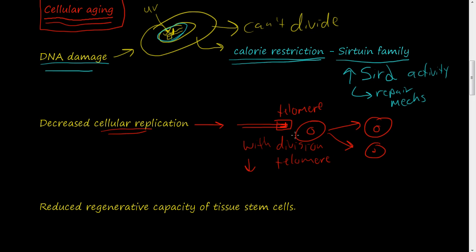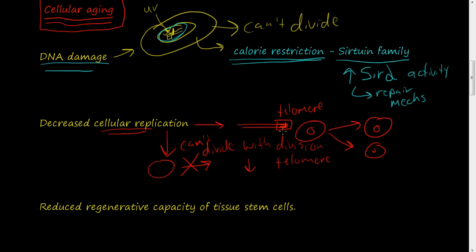After so many divisions, the cell can only replicate so many times before the telomere is gone. Once the telomere is gone, the cell enters a state called cellular senescence, which means the cell can no longer divide. So when the telomere is depleted, the cell cannot divide and goes into cellular senescence.